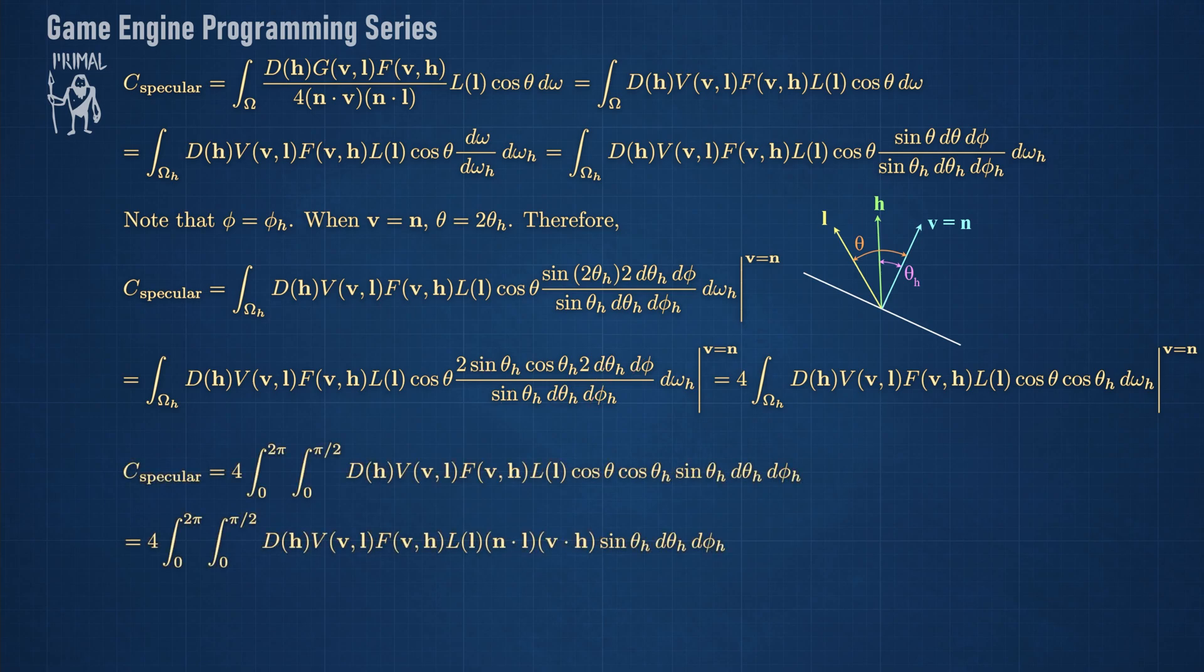We can write the remaining d omega_h using polar angles again. In addition, we can replace cosine of theta with n dot l and the cosine of theta_h with v dot h. This is our final integral which we would like to write as a discrete sum. We can divide this part by the probability density function.